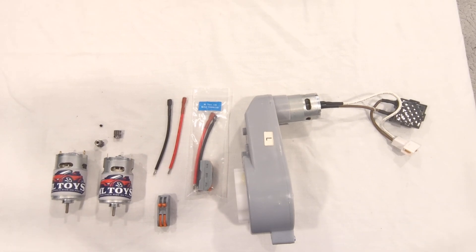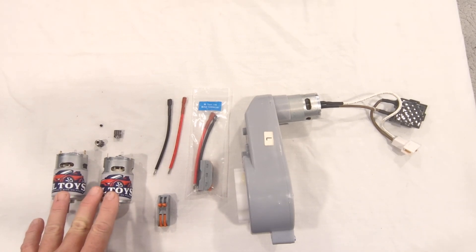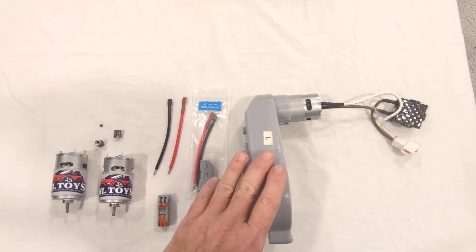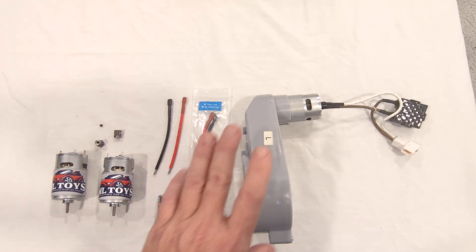This video will show you how to install the ML Toys Stage 1 Motor Kit for Huffy vehicles into the Huffy 12-volt motor gearboxes. It's very simple to do.